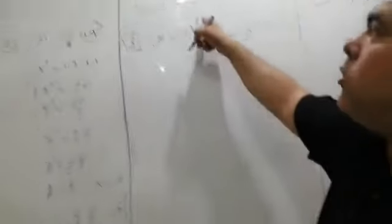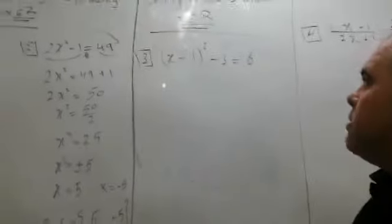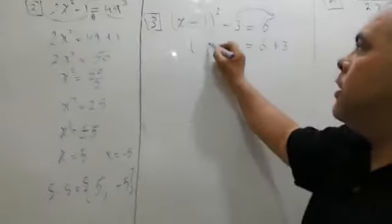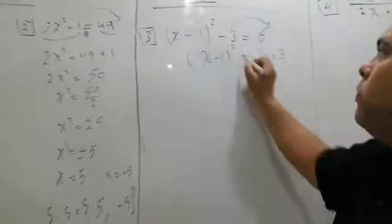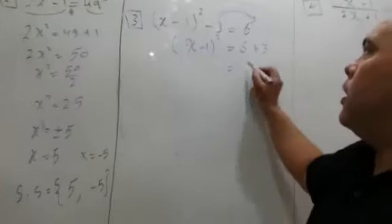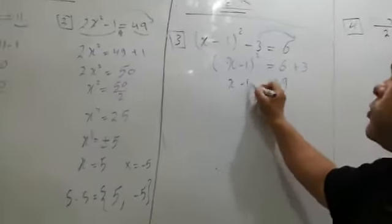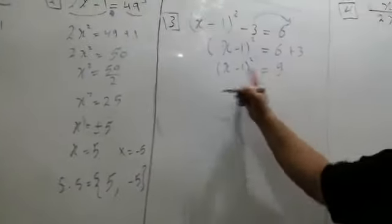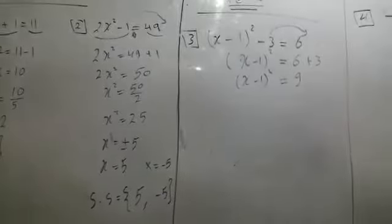x minus 1 all to the power 2 minus 3 equals 6. By the same way, equals 6 plus 3. x minus 1 all to the power 2 equals 9. Good, we should take the root for both sides.